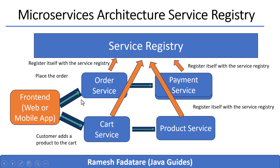Let's walk through this in action using a real e-commerce flow. A customer adds a product to their cart. The cart service now needs to get the latest price and availability — it queries the product service. But instead of calling it directly, the cart service first asks the service registry where the product service is. The registry replies with the current IP and port of a healthy instance, and the cart service connects and fetches the product info.